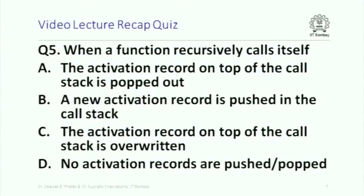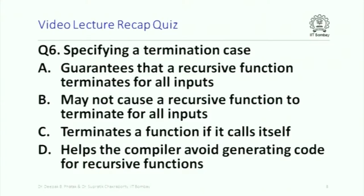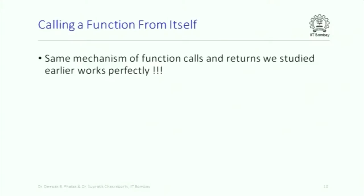When a function recursively calls itself, a new activation record is pushed in the call stack. When a function is called from any program, even if it is not recursive, an activation record gets pushed. So in short, this is the process of invoking a function — whether you are invoking it recursively or only once, an activation record has to go onto the stack. The answer to the termination case question is: specifying a termination case may not cause a recursive function to terminate for all inputs — it depends on how carefully you have written your function.